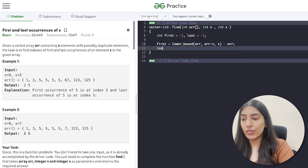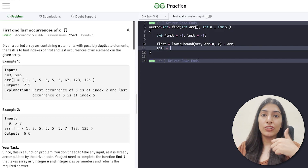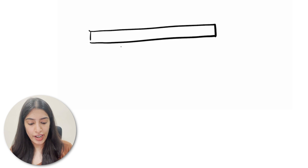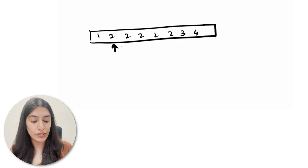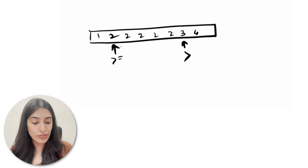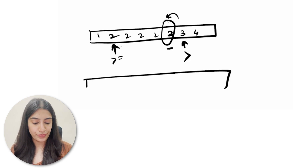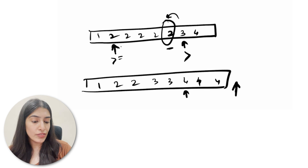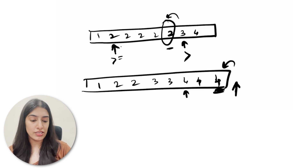For finding the last occurrence, we use upper_bound. For example, in the array {1,2,2,2,2,2,2,3,4}: if we're finding 2, lower_bound returns the first 2's position and upper_bound returns the position of 3. So to get the last index of 2, we do upper_bound minus one. Similarly if the array is {1,2,2,3,3,4,4,4} and we find 4, upper_bound returns the position after the last 4, and minus one gives us the last index.